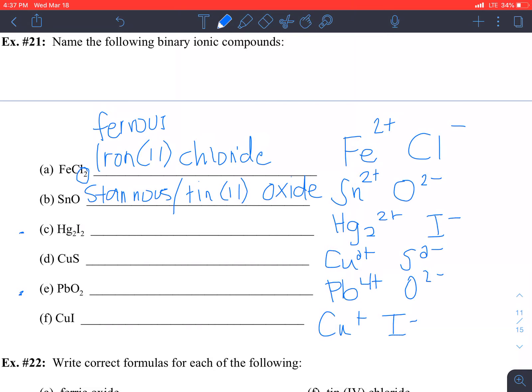Okay, this would be Hg2. We recognize that that's a mercury one ion. So this next one, I'm not going to write it out, I'm just going to say it: this is mercury one iodide or mercurous iodide.